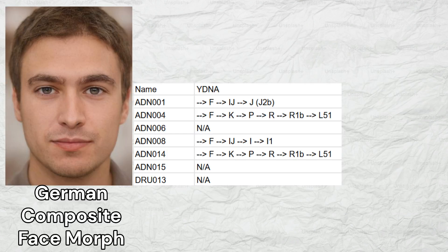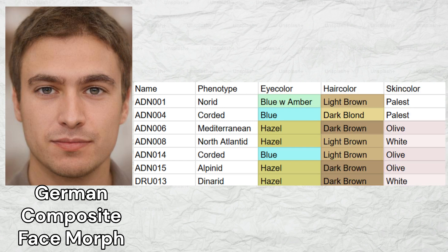The most common Y lineage among the seven samples was R1B-L51, which two samples carried. Three samples were female. Regarding their phenotypes, two samples scored a corded phenotype. There were also samples scoring Norid, Mediterranean, North Atlantic, Alpinid, and Denarid phenotypes. Here is a morph of their average phenotype.